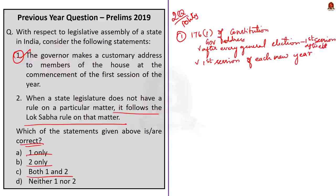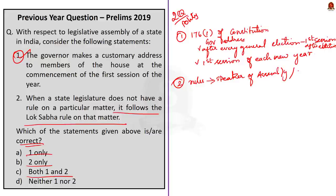Moving on to the second statement, it is quite tricky. Always remember, rules with respect to state legislature is a matter of concern for that legislature — more like a state subject. In the absence of rules on a particular matter, the speaker of the state legislative assembly or the council decides the rules; they do not follow Lok Sabha rules. So the second statement is incorrect. The correct answer for the question is option A, one only.